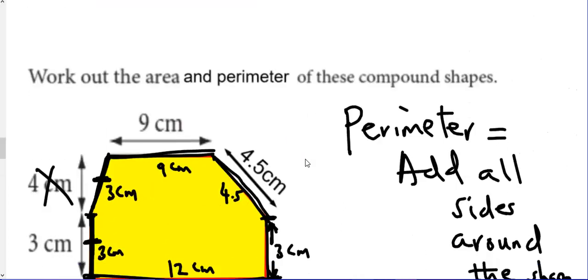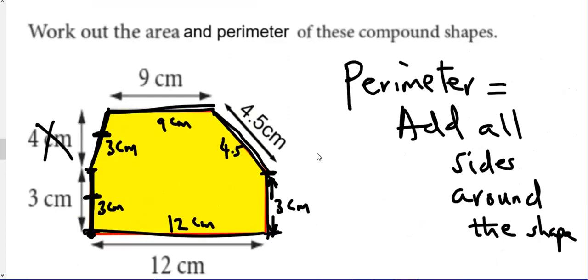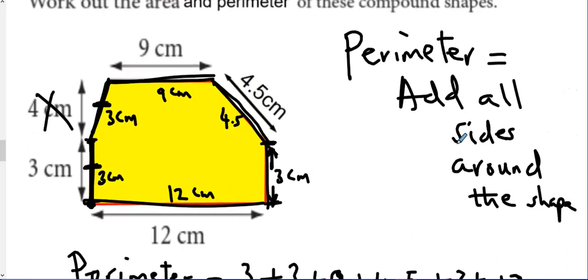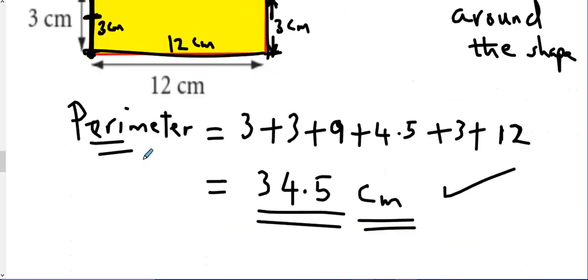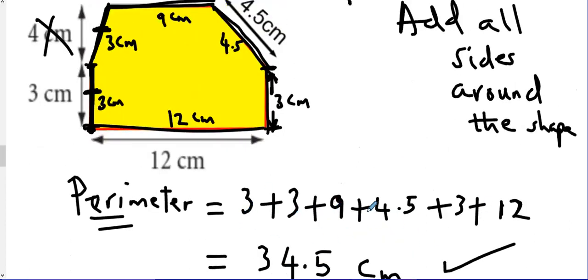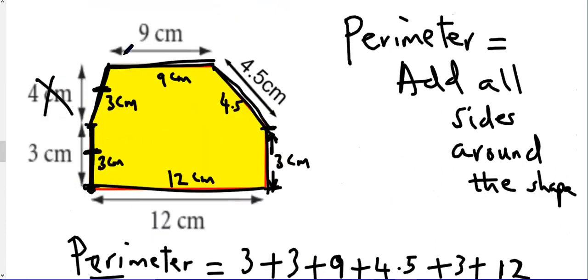Pause the video, take the formula, do the calculation, and check my answer. We have 6 sides in total. I'm done.